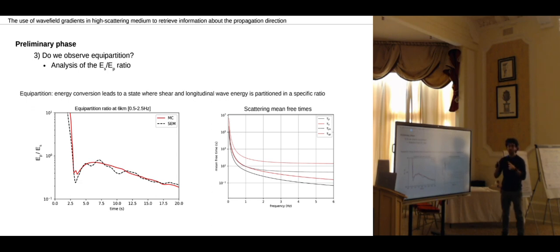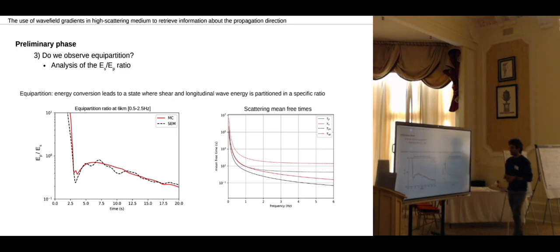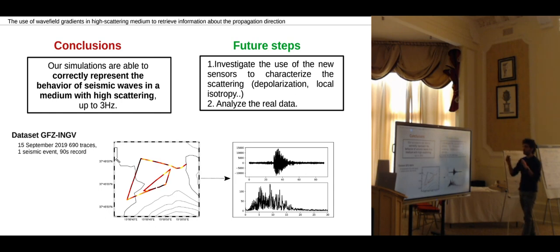Then the last thing that we looked at is the equipartition ratio. We know that the energy conversion leads to a state in which the energy is partitioned between longitudinal and shear. In this case I show, for example at six kilometers, a comparison between our observation and Ludovic Margerin's.